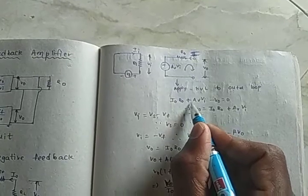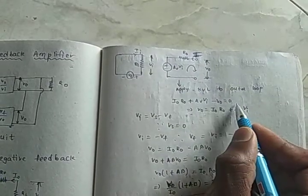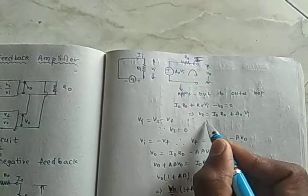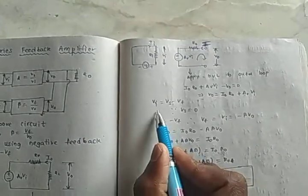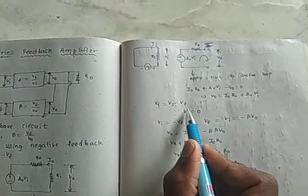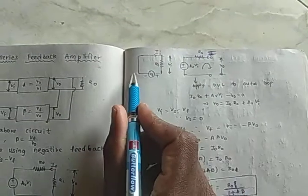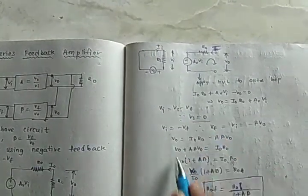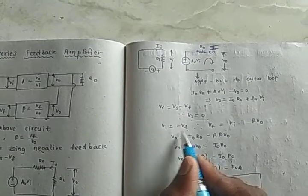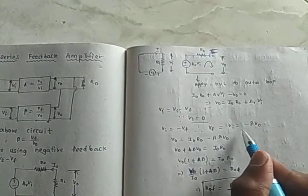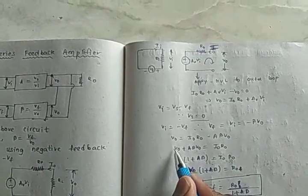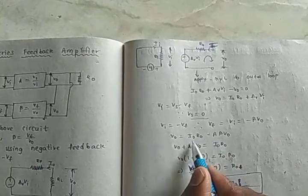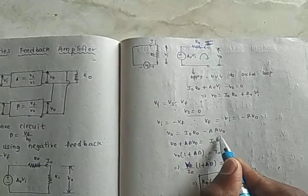By applying KVL to the outer loop: IaRi plus A Vi minus V0 is equal to 0, which implies V0 is equal to IaRi plus A Vi. And again write the equation: Va is equal to Vs minus Vf. Since the source voltage is 0, then Va is equal to minus Vf. Vf we know the value: Vf is beta V0. Since it is minus, minus beta V0. And V0 is equal to I0R0 minus A beta V0.